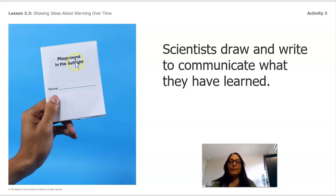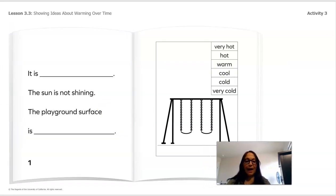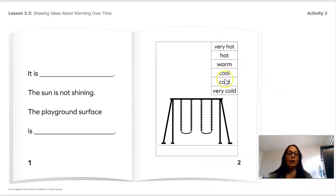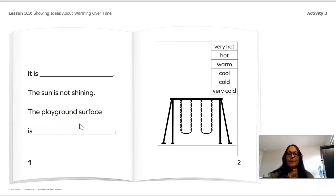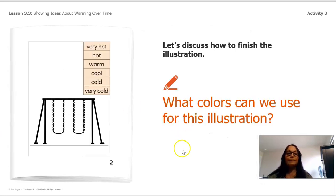In our mini book 'Playground in the Sunlight,' we have a thermometer with temperatures: very hot, hot, warm, cool, cold, and very cold, each with different colors. The first page says: 'It is blank, the sun is not shining, the playground surface is blank.' We know that when the sun is not shining, the playground surface is going to be a particular temperature. Think about the colors and the thermometer — is it going to be hot or cold?